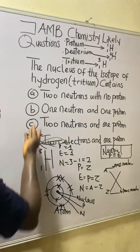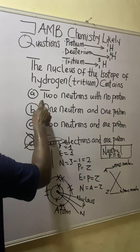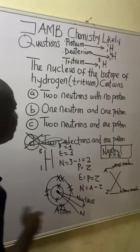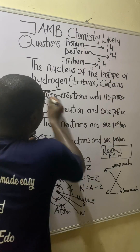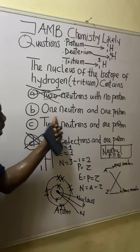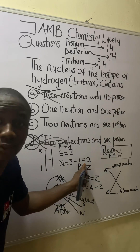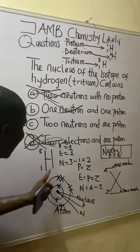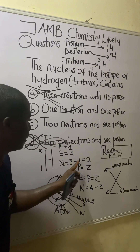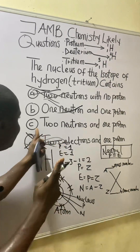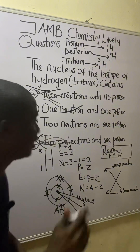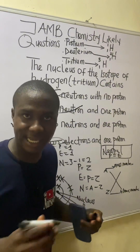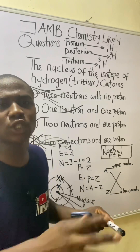Let's check the options. Option A has two neutrons but no proton — wrong. Option B has one neutron, but we need two — wrong. Option C has two neutrons and one proton, which matches our answer. Therefore, the correct answer is option C.